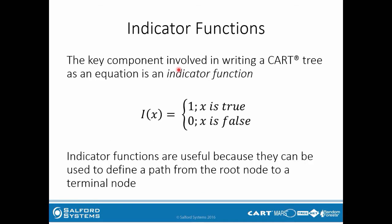The key component involved in writing a CART tree as an equation is an indicator function, which is defined here. If x is true then this entire function takes a value of 1, and if x is false then this function takes a value of 0. Indicator functions are quite useful because they can be used to define a path from the root node — the node at the top of the tree before any splitting has occurred — all the way down to a terminal node.